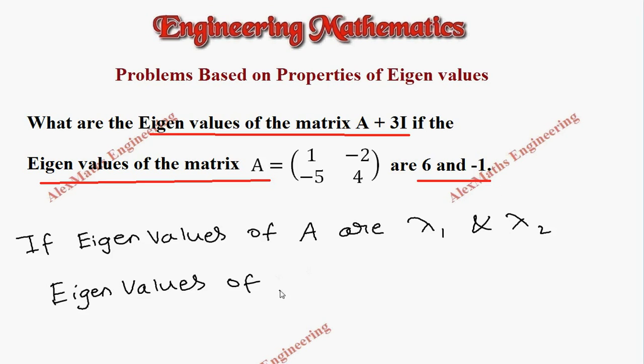By property, the eigenvalues of the matrix A + kI are λ₁ + k and λ₂ + k.